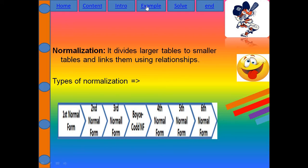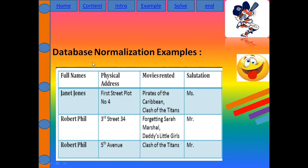Here is my example table, which has four columns: full name, physical address, and salutation. For doing First NF, we need to discard multiple values. In this table, the 'movie rented' column has multiple values.